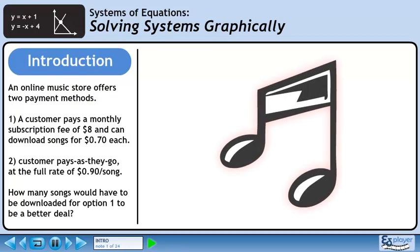An online music store offers two payment methods. In Option 1, a customer pays a monthly subscription fee of $8 and can download songs for $0.70 each. In Option 2, the customer pays as they go at the full rate of $0.90 per song. How many songs would have to be downloaded for Option 1 to be a better deal?